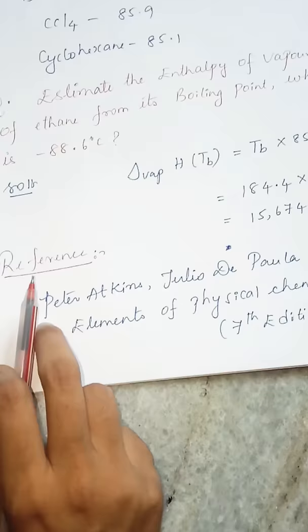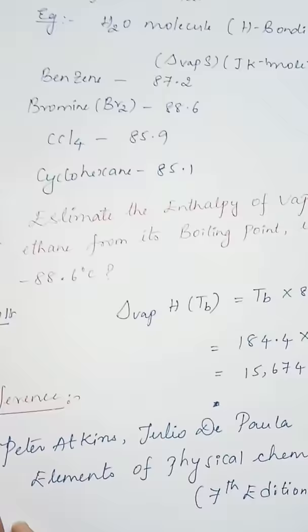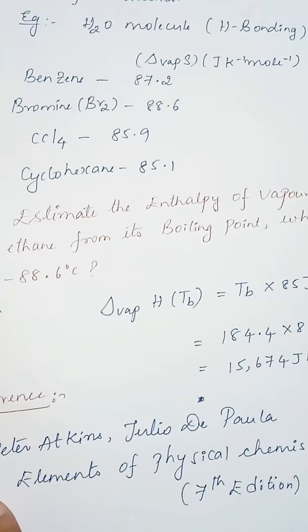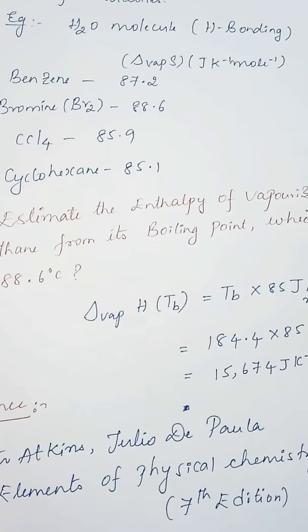You can refer to the book by Peter Atkins, Julio De Paula, Elements of Physical Chemistry, seventh edition. This is 2017 edition and it's really a very good book for thermodynamics, and especially this Trouton's Rule concept, because hardly you will find Trouton's Rule anywhere on YouTube. So I thought I'll make a video and it will be helpful for all. All right, so thank you, thanks a lot.